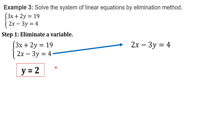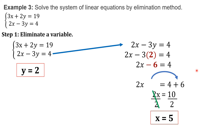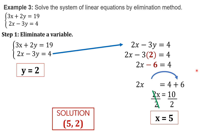Change the variable y into 2. So, we'll have 2x minus 3 times 2 equals 4. 3 times 2 will give us 6. Leave x because we are solving for x. Transpose this negative 6 to the other side — it will change sign and become positive 6. Combine it with positive 4: you will have positive 10. Bring down 2x. Divide both sides by 2 to cancel 2. Now we have x equals 5. Therefore, the solution for this system of linear equations is (5, 2) — 5 for x and 2 for y.